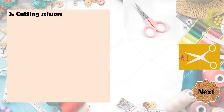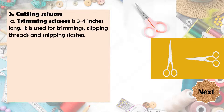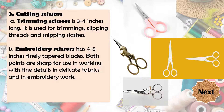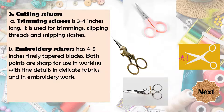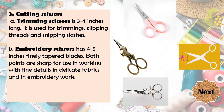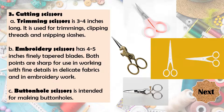This is what we call the trimming scissors. It is 3 to 4 inches long and is used in trimmings, clipping threads, and snipping slashes. Another cutting scissors is the embroidery scissors. It has 4 to 5 inches fine and tapered blades — both points are sharp for use in working with fine details, in delicate fabrics, and in embroidery work. And the last cutting scissors is the buttonhole scissors, intended to make buttonholes. When we cut the buttonholes, we use the buttonhole scissors.